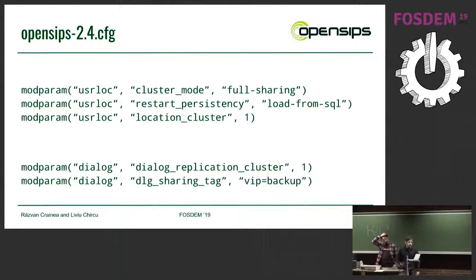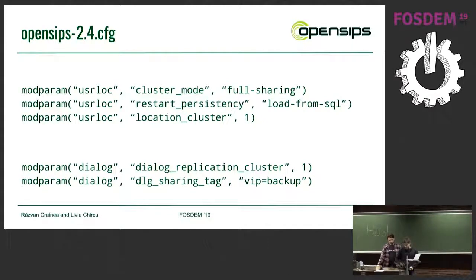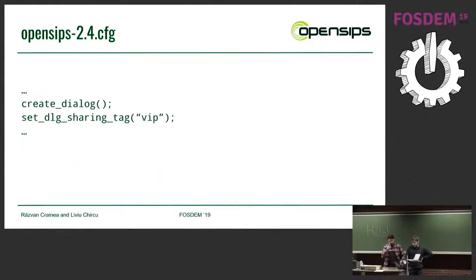Enabling this is done in about three lines of config. All you have to do is switch user location into persistency mode and full sharing, give it a cluster ID, do the same for dialogue, and after you create the dialogue, tag it with the VIP tag. That's all you have to do.